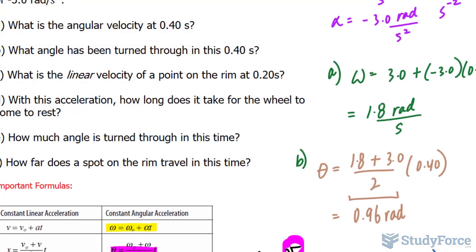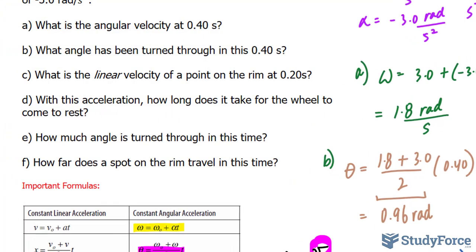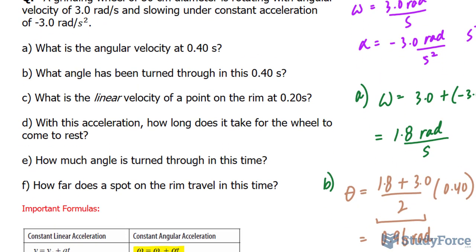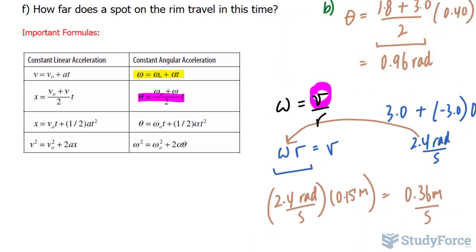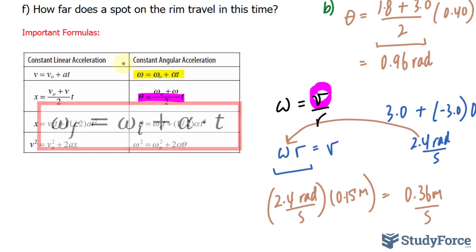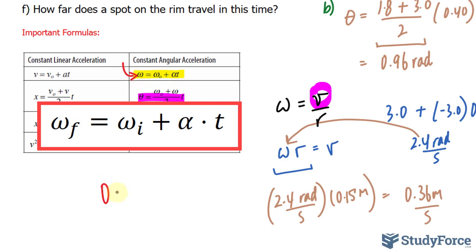Now, for question D, with this acceleration, the acceleration given in the question, how long does it take for the wheel to come to rest? Now, if the wheel is coming to a rest, that means its velocity is equal to 0, or its angular velocity is equal to 0. That being said, I'll be using this relationship again and setting that omega, the final, equal to 0, because it's not moving.